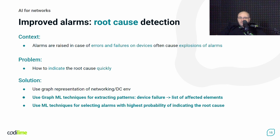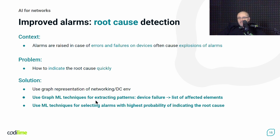Generally, such a graph representation is quite complex, but we need to use it to extract some patterns. In the simplest form, a pattern is a device failure and the list of affected elements caused by such a failure. The affected elements in fact represent the explosion of alarms. We need to interpret them and determine that the root cause — the primary reason — was on a particular device. A plethora of techniques can be used here as well.